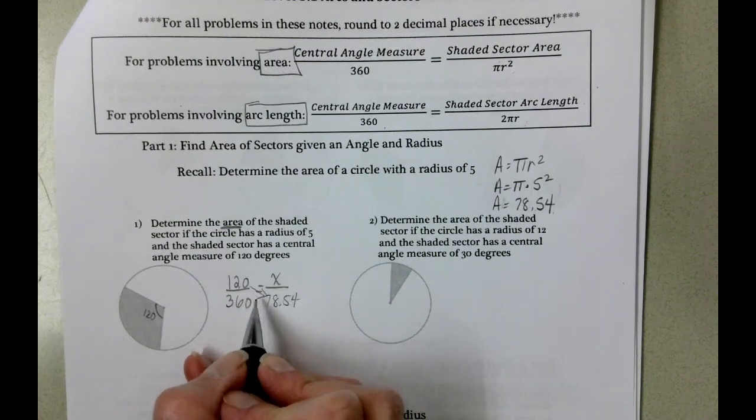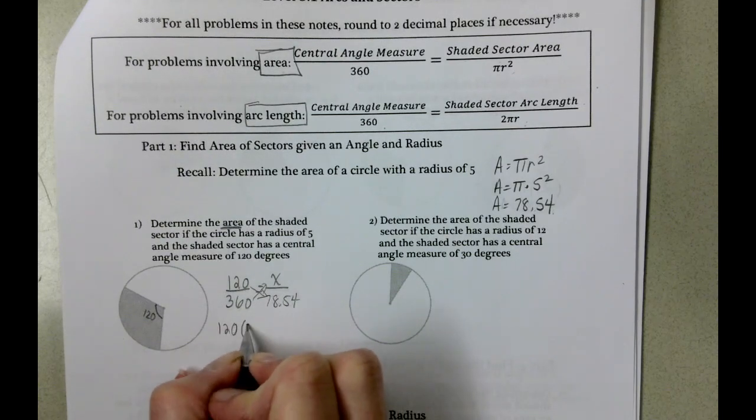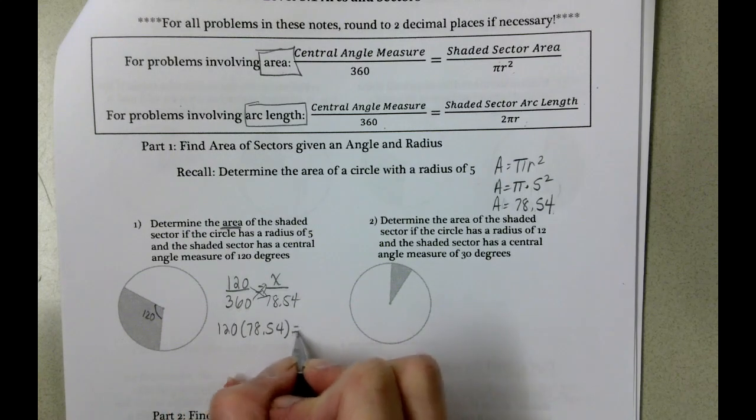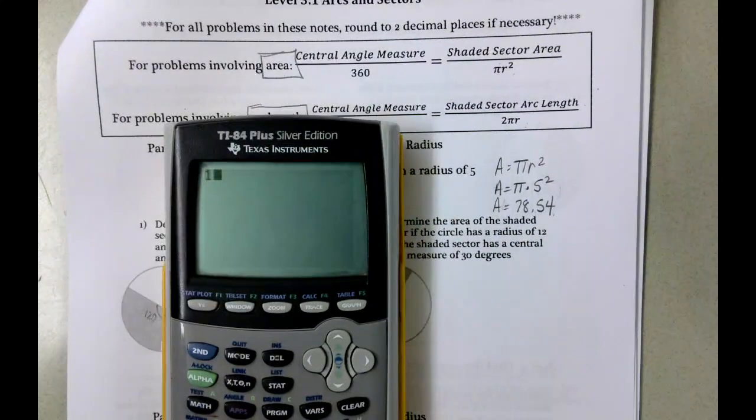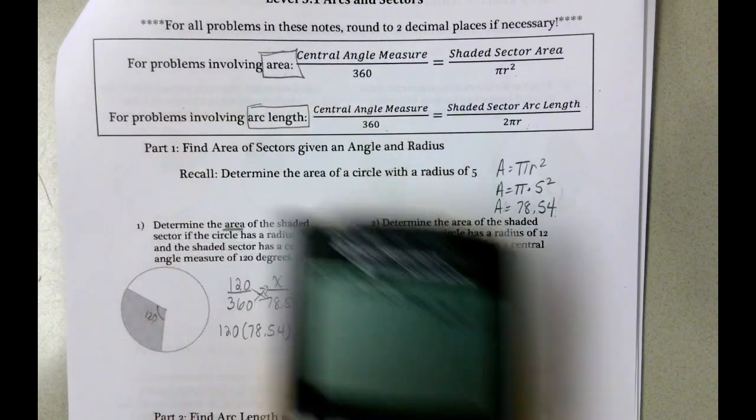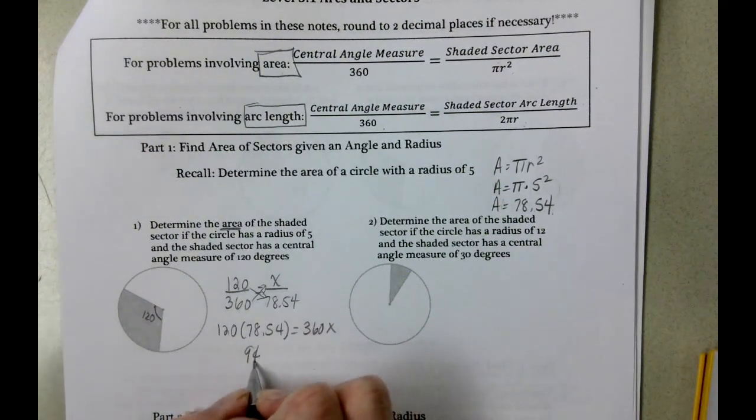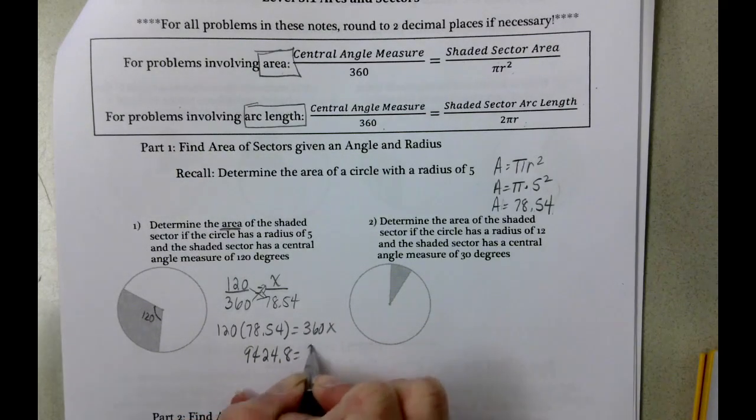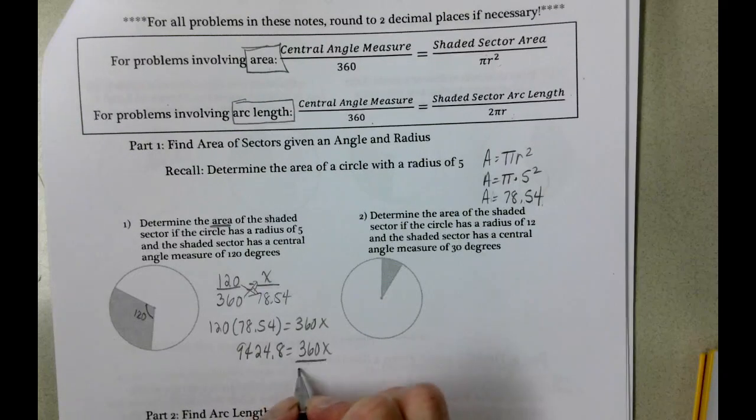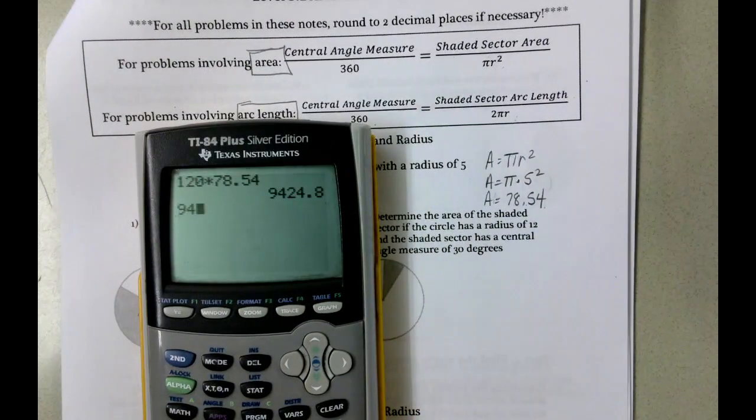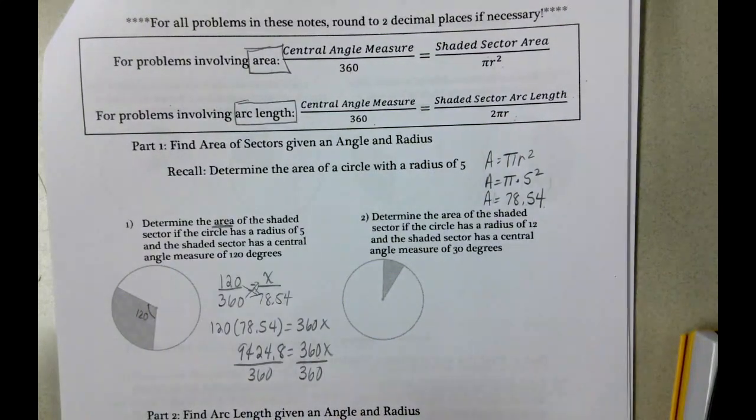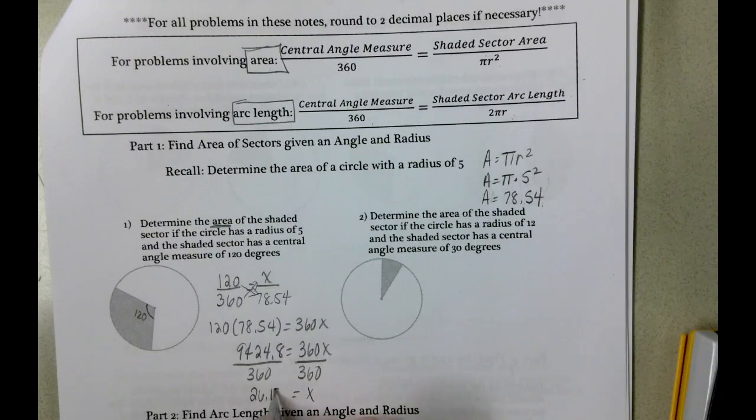And we are going to cross multiply. So it's going to be 120 times 78.54 equals 360 times x. 120 times 78.54 is 9424.8. And that equals 360 times x. And then we're going to divide both sides by 360. And we get 26.18.